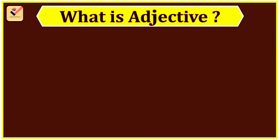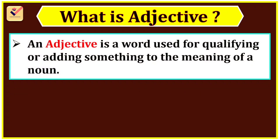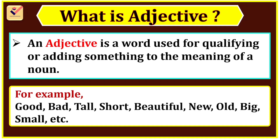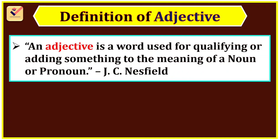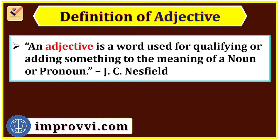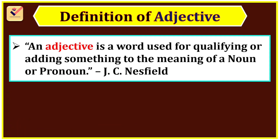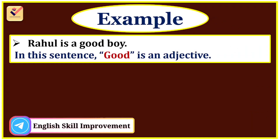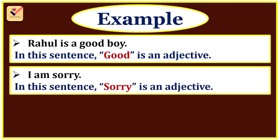What is an Adjective? An adjective is a word used for qualifying or adding something to the meaning of a noun. For example: good, bad, tall, short, beautiful, new, old, big, etc. According to J.C. Nesfield, an adjective is a word used for qualifying or adding something to the meaning of a noun or pronoun. According to Ren and Martin, an adjective is a word used to add something to the meaning of a noun. For example: 'Rahul is a good boy.' — good is an adjective. 'I am sorry.' — sorry is an adjective.